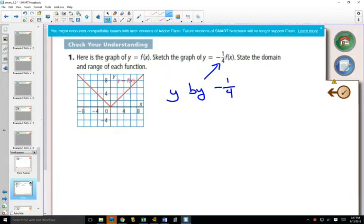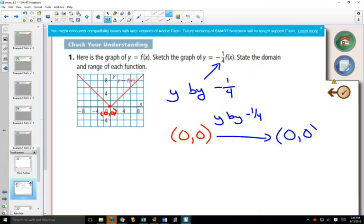Now, when we do that to this graph, we're going to pick some key points. On this graph, this point is going to be important, 0 comma 0. And we're going to change that. The only thing that needs to be changed, we'll write above here that we're going to multiply our y value by negative one quarter. So when we do that, 0 times negative one quarter is still 0. So this point doesn't change.